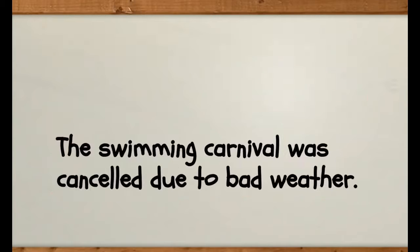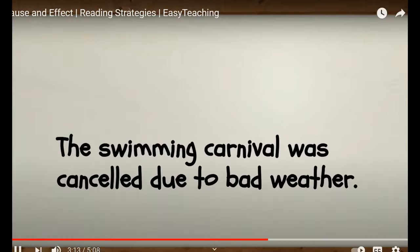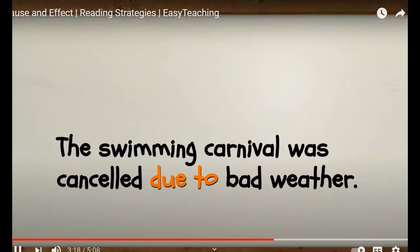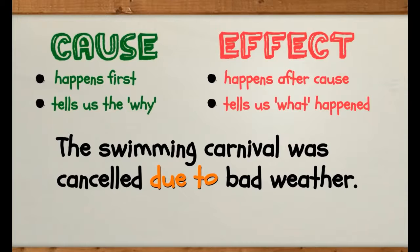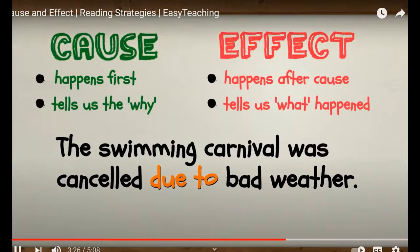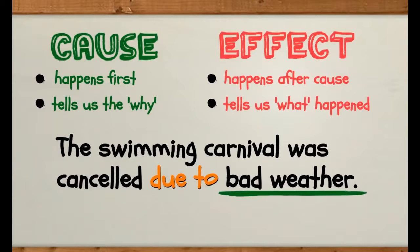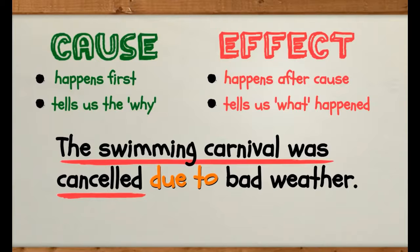Let's look at this sentence. Can you find a signal word or phrase? The swimming carnival was cancelled due to bad weather. The signal phrase is 'due to.' The cause is the bad weather because it was the event that happened first and it tells us the why. The effect is the swimming carnival being cancelled because it happened after the cause and tells us what happened.